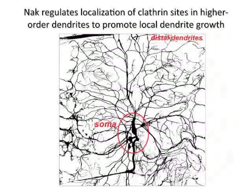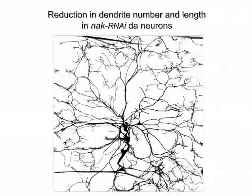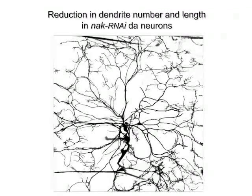We posit that each dendrite has to organize different cellular machinery for its own behavior, such as the coordination of exocytosis and endocytosis. This work started with the study of mutants for the non-receptor-associated kinase called Nak. In Nak mutants, the number and length of dendrites are reduced, and these phenotypes are particularly prominent in distal higher-order dendrites.